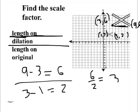Let's check it: 1 times 3 is 3, 2 times 3 is 6, 3 times 3 is 9, 2 times 3 is 6. Does everyone see the pattern? That's how you find the scale factor — length on dilation over length on original. Any questions? Alright, here's your homework.